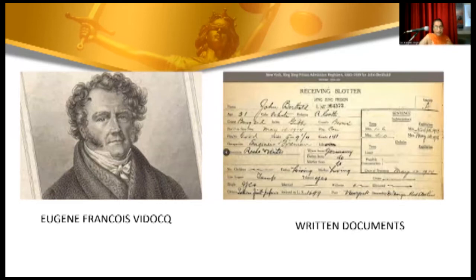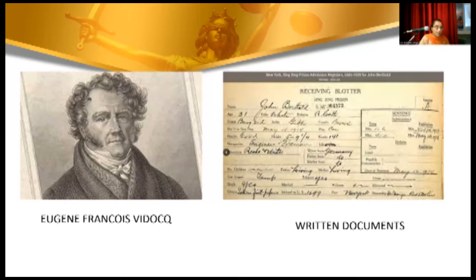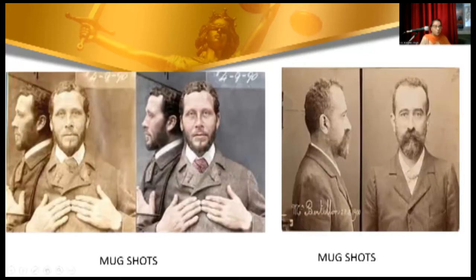He was said to be the first private detective in the Paris police and created a full unit for observing prisoners and collecting their data. Eventually, because it became difficult to remember everything, they started making written documents — description dockets wherein everything was jotted down: name, scars, old tattoos, hair color, and anything peculiar — all documented as an identification process.